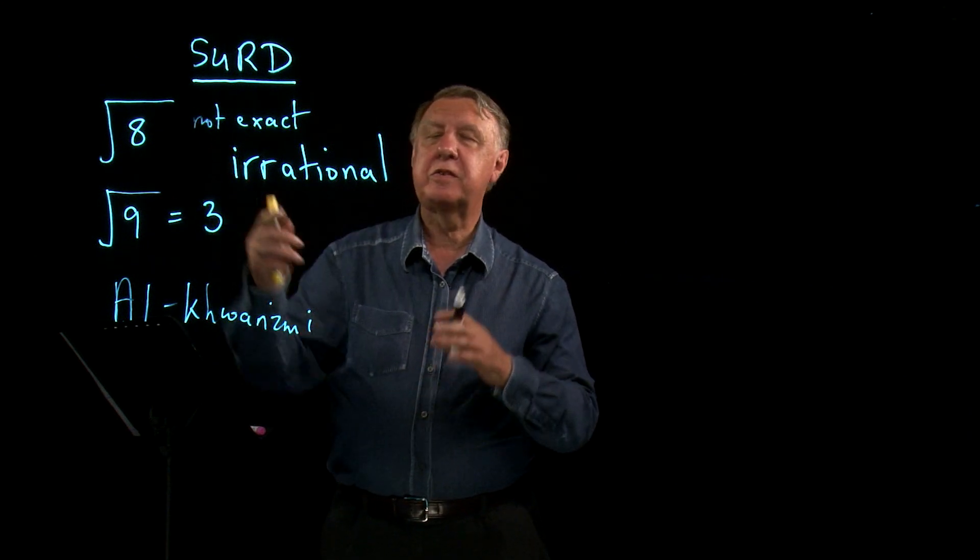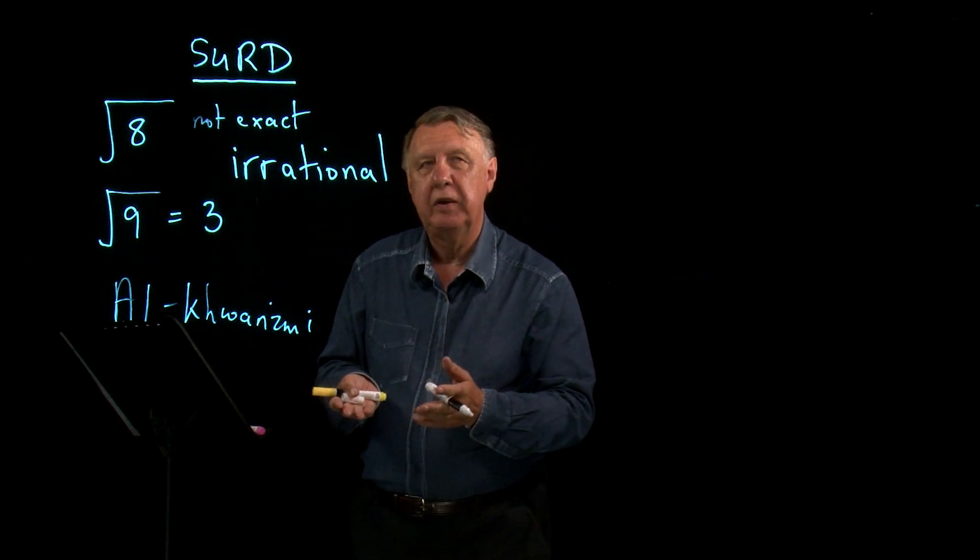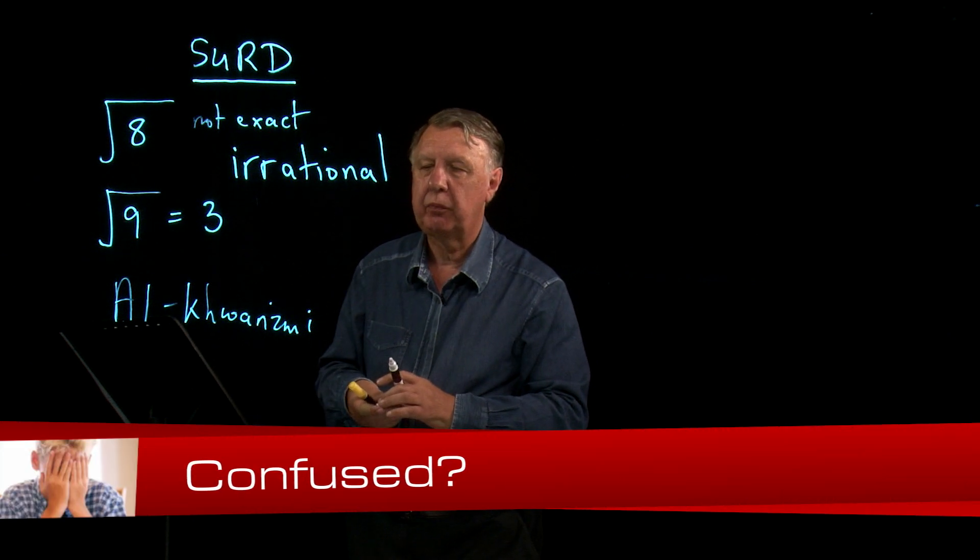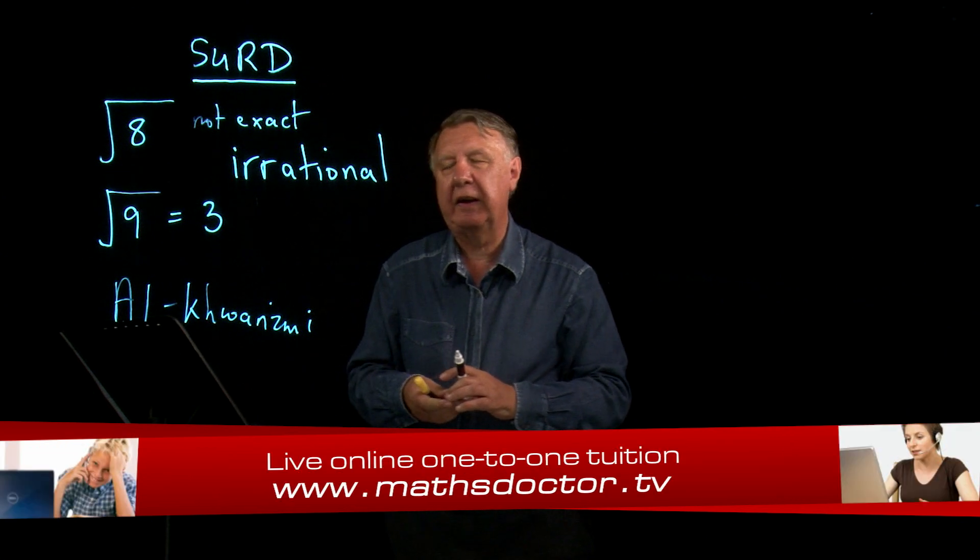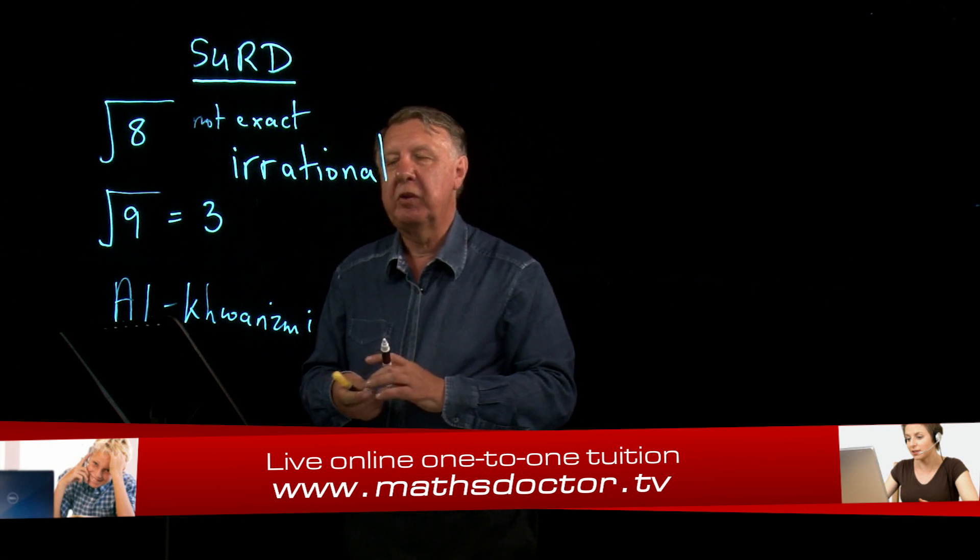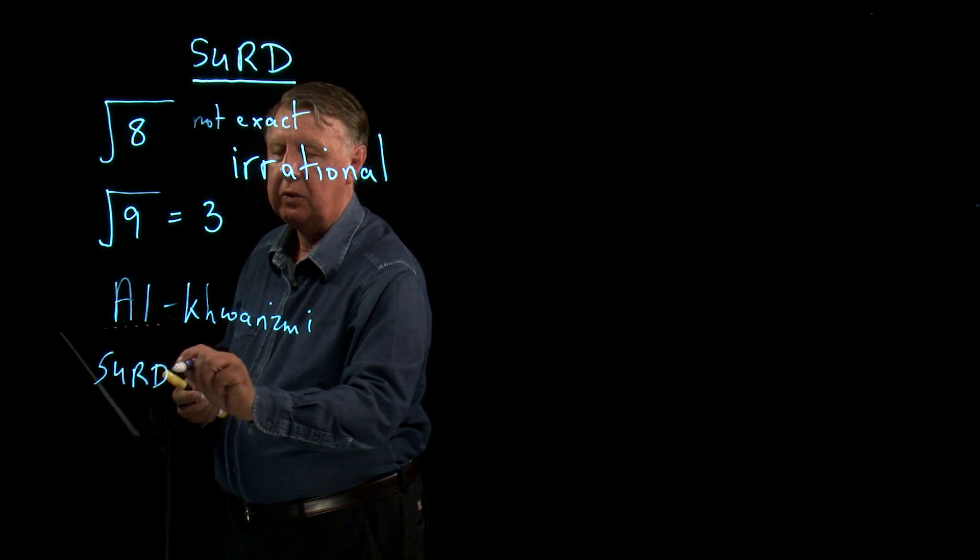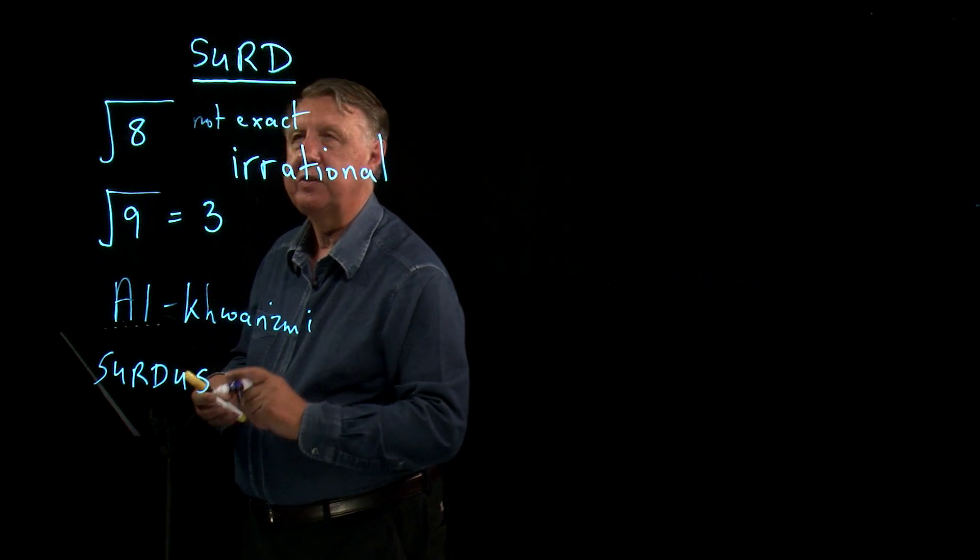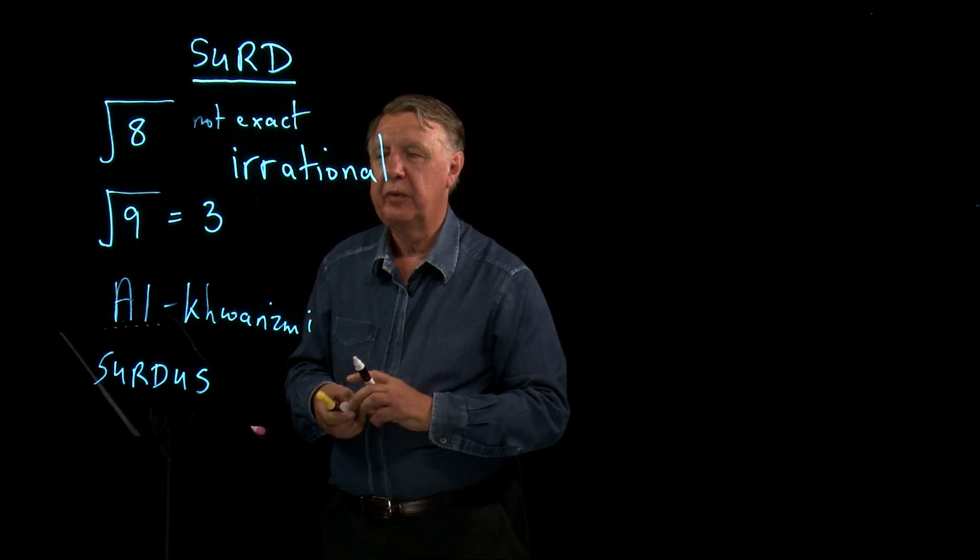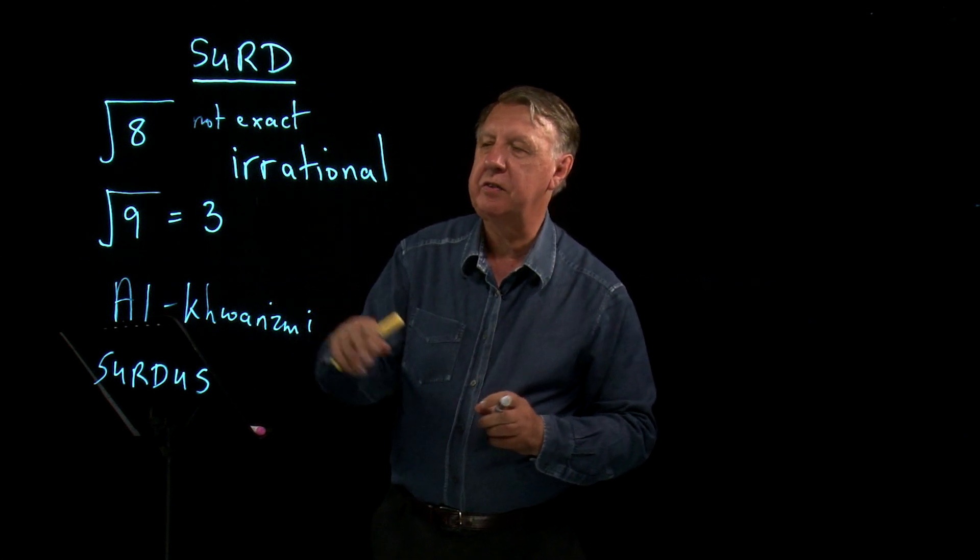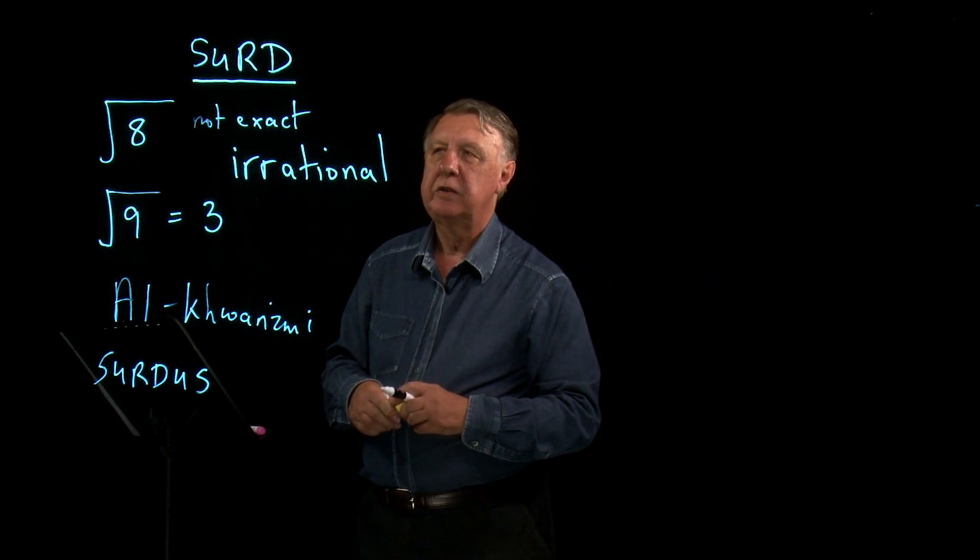Silent because they couldn't be exact. They couldn't express themselves as a whole number, as a fraction. And then in about 1150, the name SURDUS from the Latin came into play, and eventually our modern word is SURD. So if you'd like to look up the history of these, there's a lot of fascinating stuff there to find out.